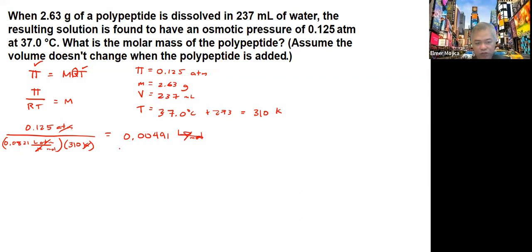Now we know molarity equals mols per volume. You're given the volume here, 237 mL. So you have 0.00491 mols per liter.